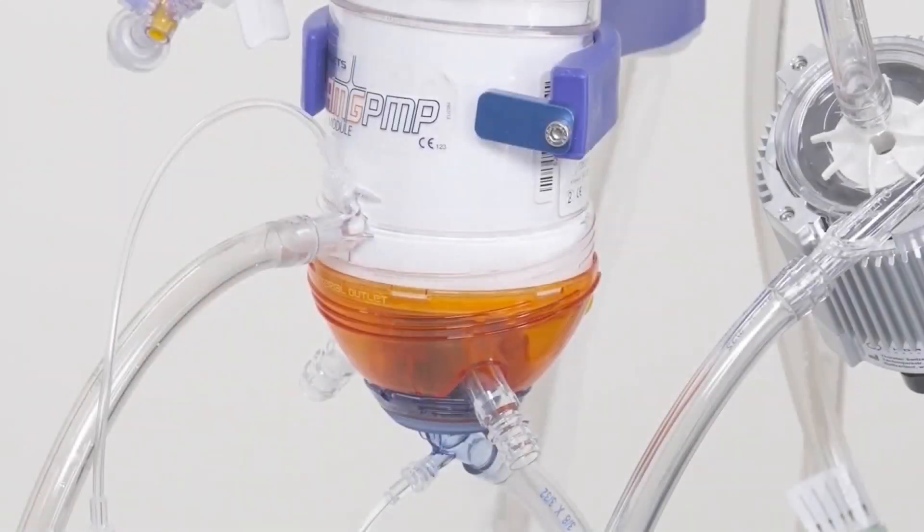Once the circuit is assembled, it's important to check the integrity of the heat exchanger prior to using the oxygenator. If any leaks are noted, obtain another oxygenator.